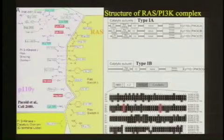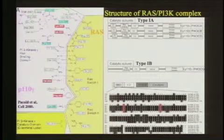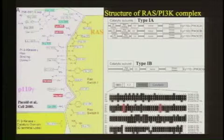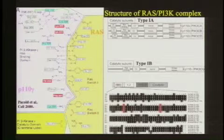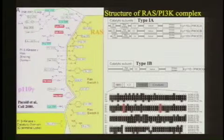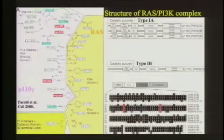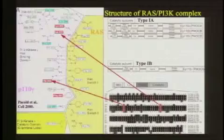What Tony did was set out to make a mouse in which that interaction couldn't occur, to really characterize the importance of that specific interaction. We did this on the basis of structure done by Roger Williams of RAS bound to the PI3 kinase gamma subunit. There are four isoforms of the catalytic subunit of the type 1 PI3 kinases, and we made the mutations in the alpha subunit, which is ubiquitously expressed — whereas gamma is not — and alpha has subsequently been shown to be an oncogene in its own right, frequently mutated in human tumors. Those are the two mutations we made that disrupt that interaction.